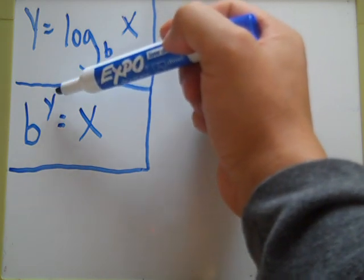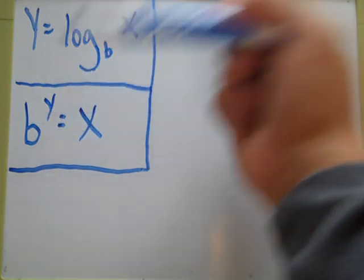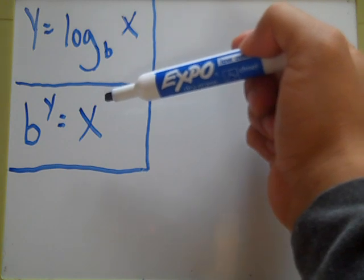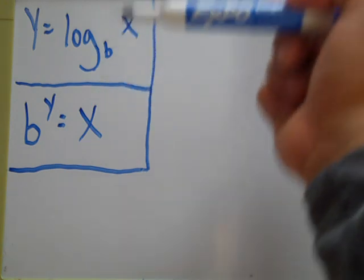So your y is always your exponent. B is always your base. And x is what you have set the expression equal to.